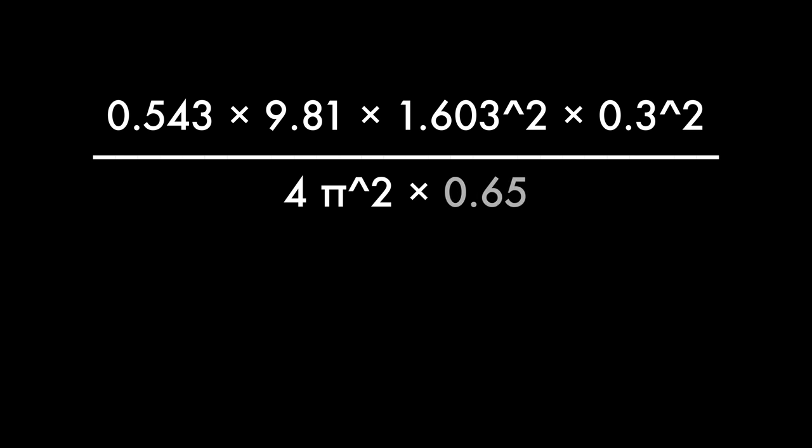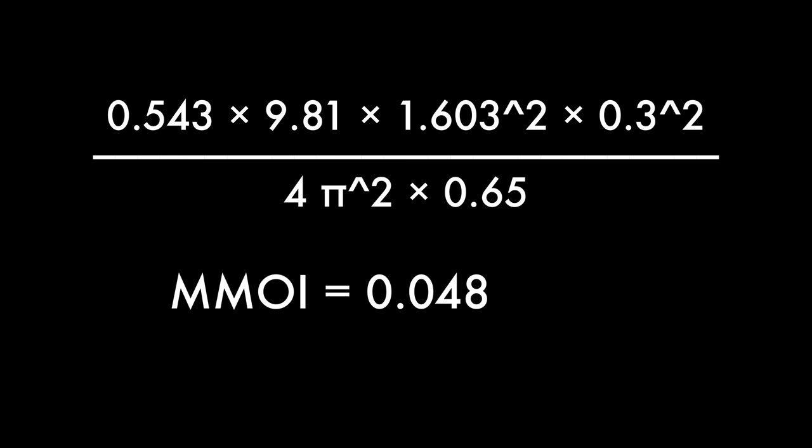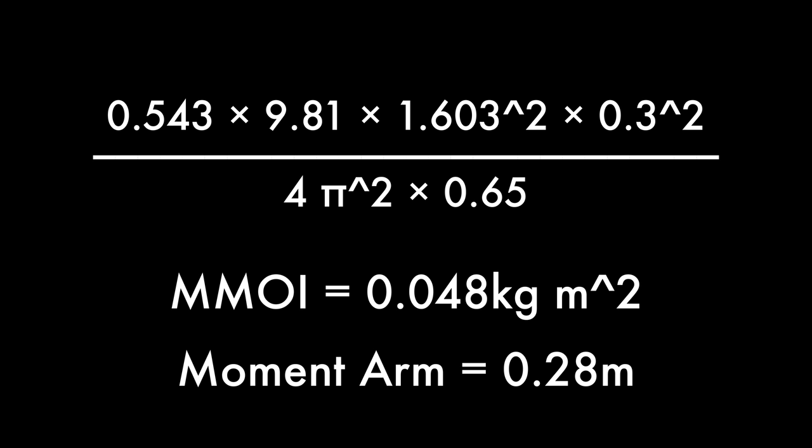Now we can convert these measurements into the vehicle's mass moment of inertia. We multiply the vehicle mass by the gravitational constant, that gets multiplied by the rotation time squared, multiplied by the distance between the center of mass and the string squared. This is all over 4π squared, multiplied by the length of the string from the table to the vehicle. The resulting value from this equation is 0.048 kilogram meters squared. So armed with this value and our moment arm, which is 0.28 meters, we can bring it into Simulink. So let's get started.